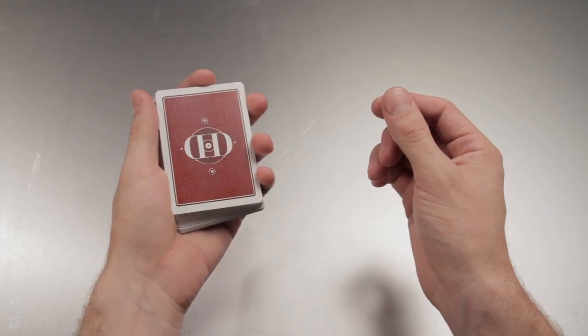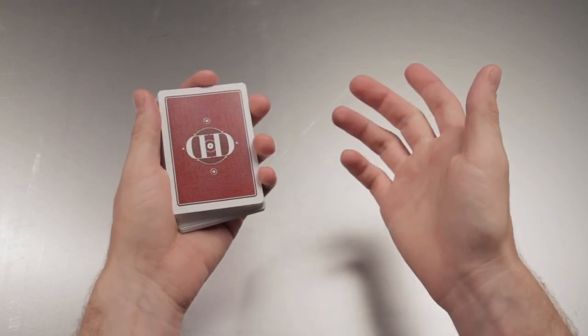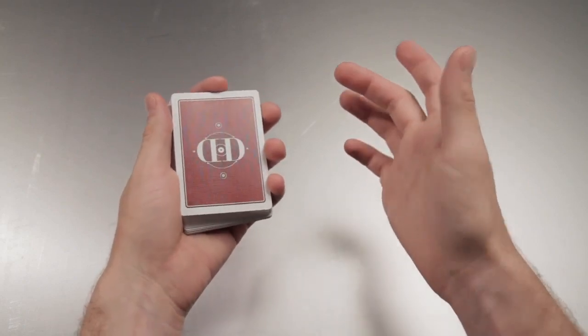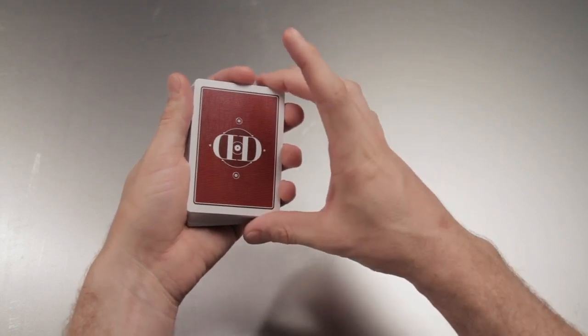Begin with the cards held in dealer's grip. Come over with your opposite hand and place the middle finger at that outer right edge and the thumb at the inner right edge.